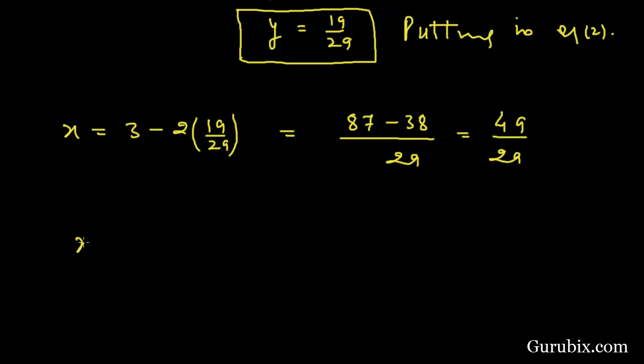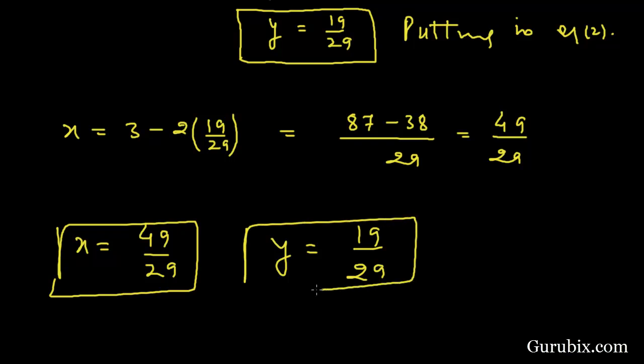So the value of x is 49/29 and the value of y is 19/29. This is the solution of the example. Thank you.